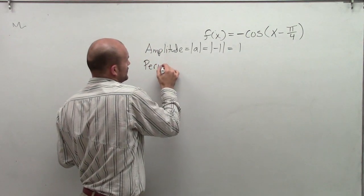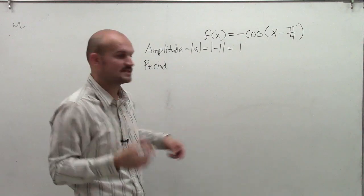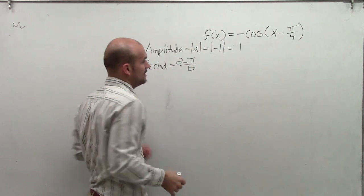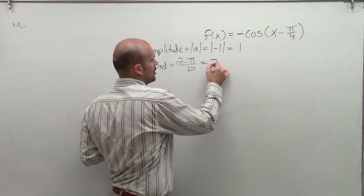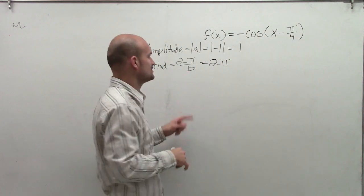The next thing is we're going to look at our period. Now remember, the period is going to be the distance that it's going to take our function to complete one cycle. So the period is the rule of 2 pi divided by b, where b is our coefficient of x, which in this case, you can see our period is still going to remain 2 pi as b equals 1.